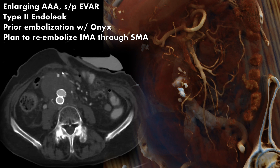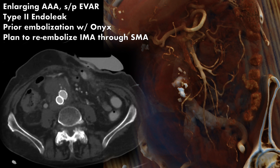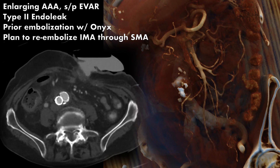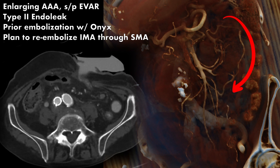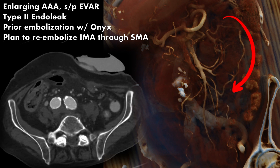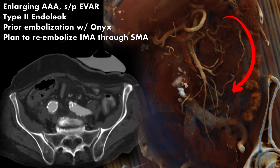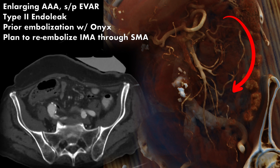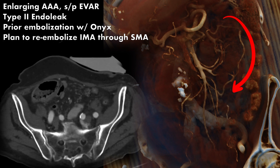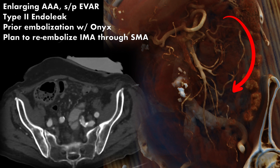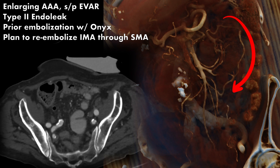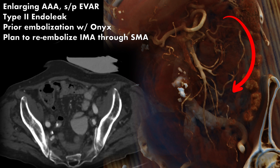Our plan was to embolize the inferior mesenteric artery through the superior mesenteric artery using the arch of Riolan. This can be appreciated in the right image, which was reconstructed from the patient's CT scan.